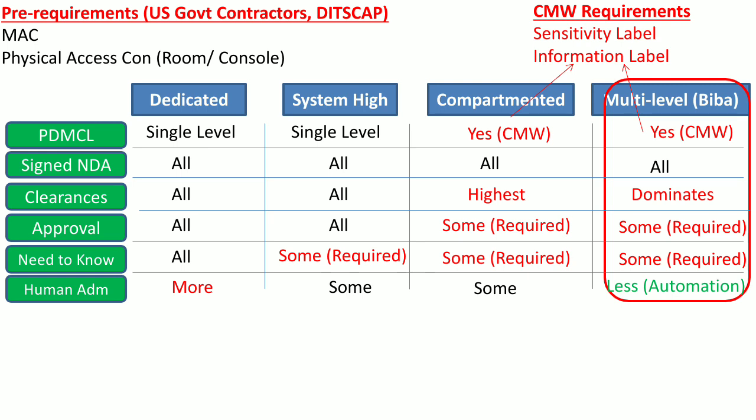Multi-level is the least secure and most risky security mode in which an information system may get deployed, depending upon the security requirements of the organization, while dedicated security mode is the most secure.